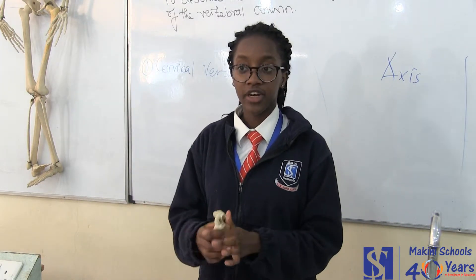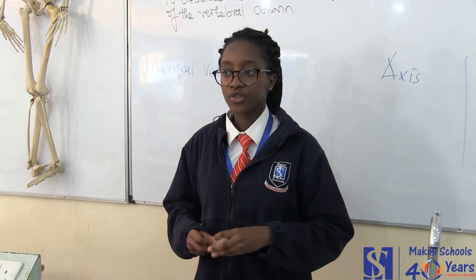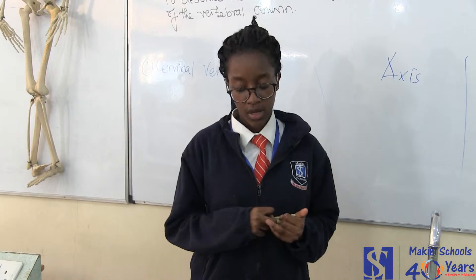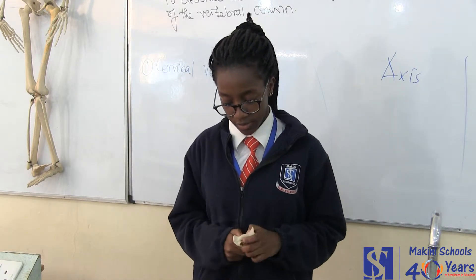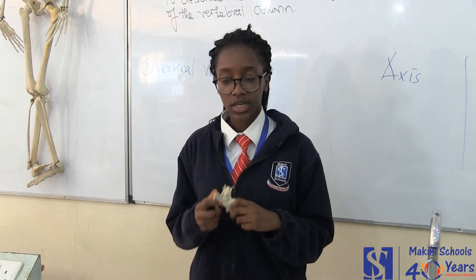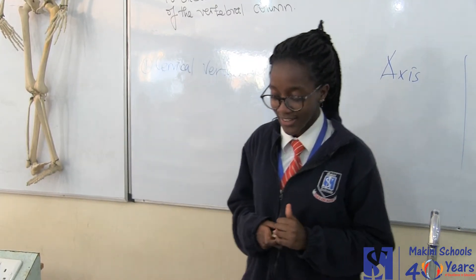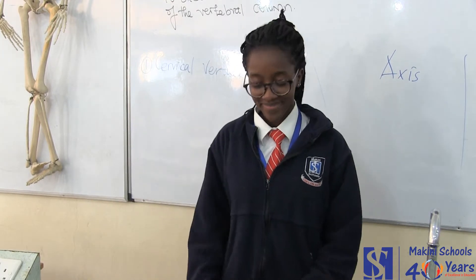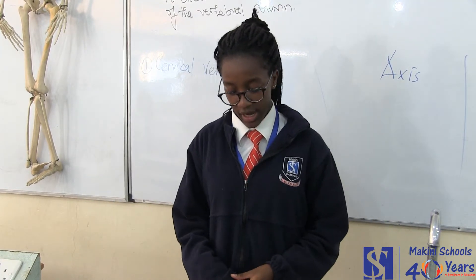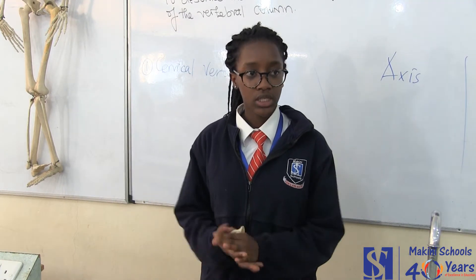The functions of this bone are that they are all fused to form the sacrum. This sacrum articulates with the pelvic girdle to form the hip joints. It also absorbs the weight of the body.